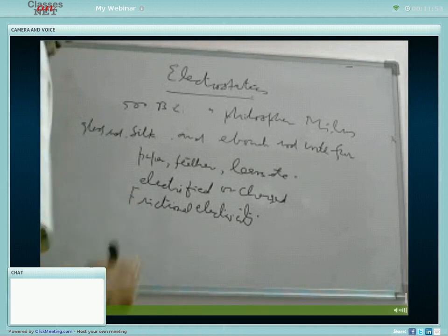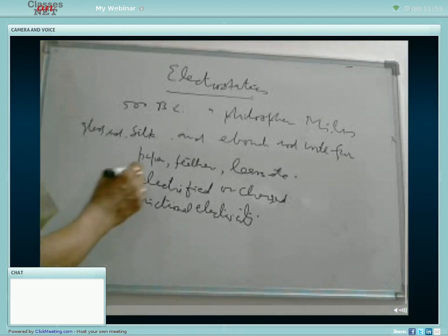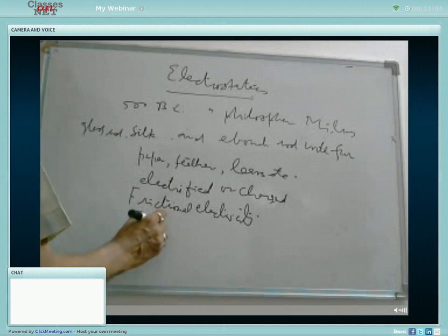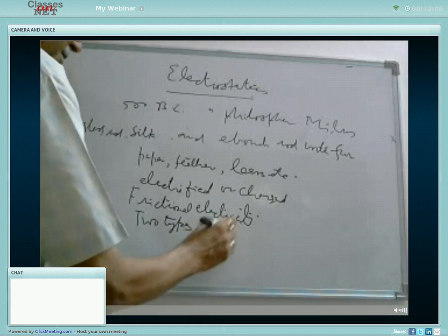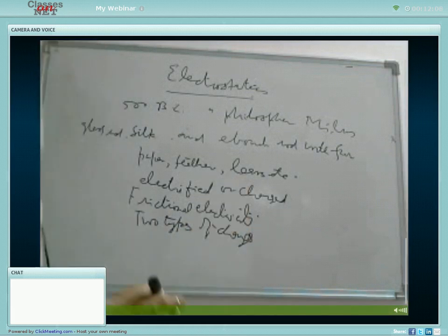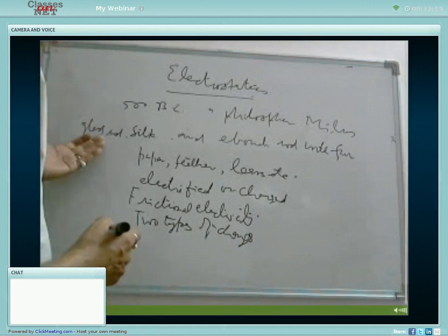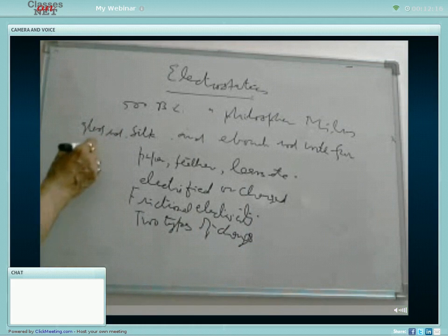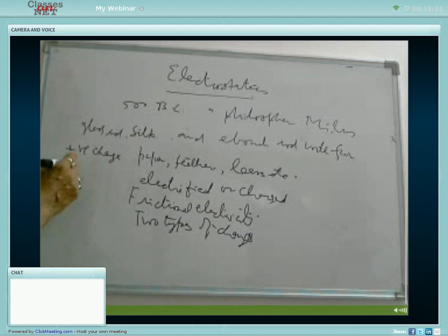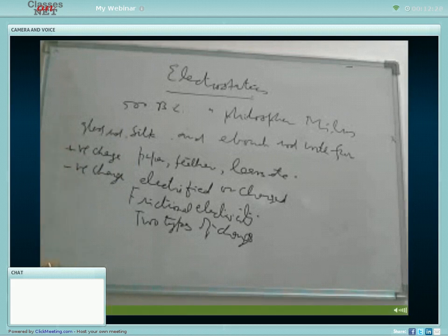It was later found that the charges which we develop are of two types of charges. For example, the glass rod on rubbing with silk attains, we can call it to be positive charge, and the silk attains negative charge, in juxtaposition. That means there are two types of charges, positive and negative.